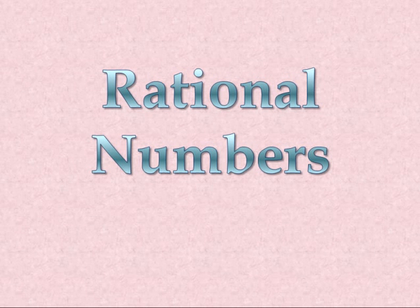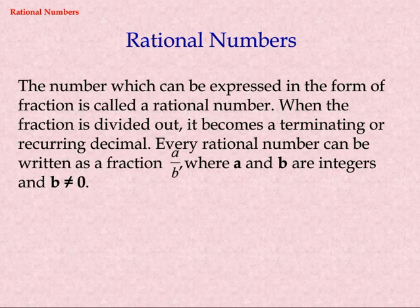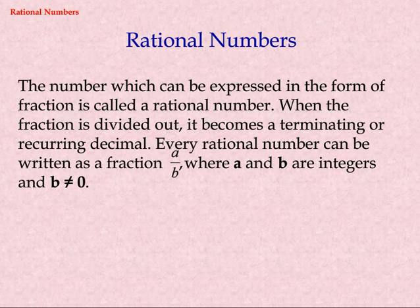Topic: Rational Numbers. The number which can be expressed in the form of a fraction is called a rational number. When the fraction is divided out, it becomes a terminating or recurring decimal. Every rational number can be written as a fraction a by b, where a and b are integers and b is not equal to zero.